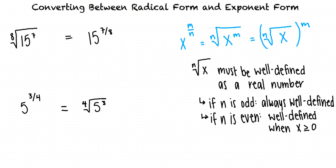So when converting between radical and exponent form, we use the fact that x raised to the power of m over n is equal to the nth root of x raised to the m, in order to rewrite our expression. It seems like you're getting the hang of converting between radical form and exponent form.